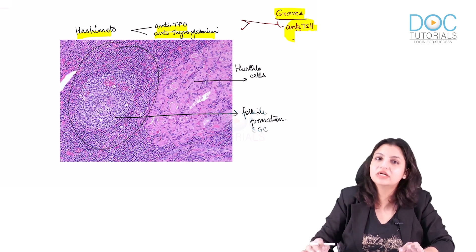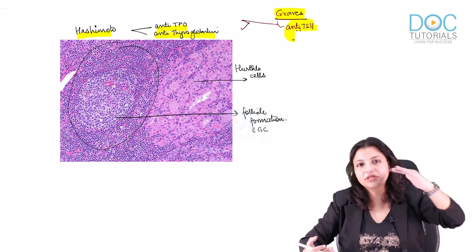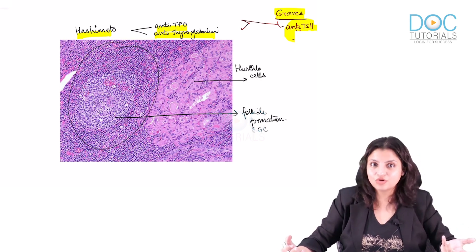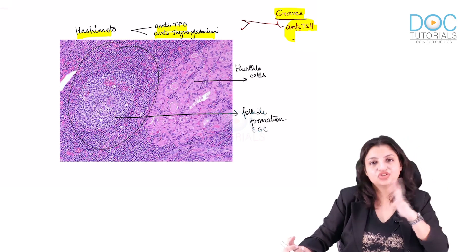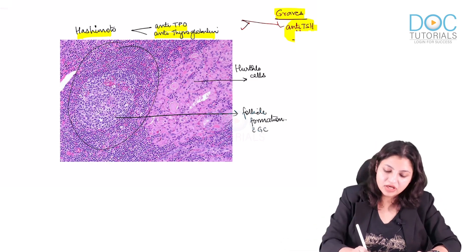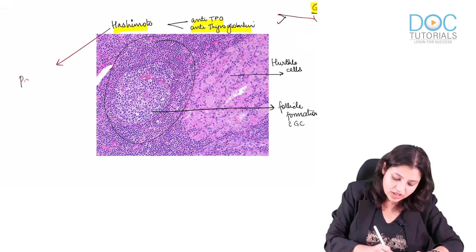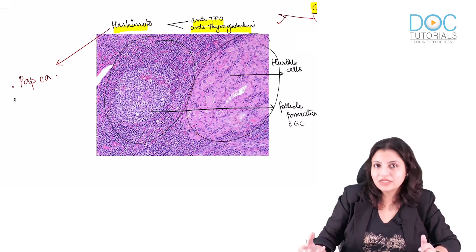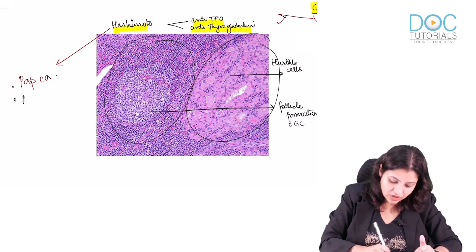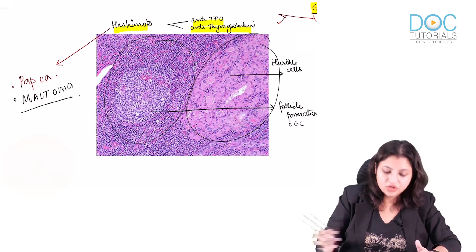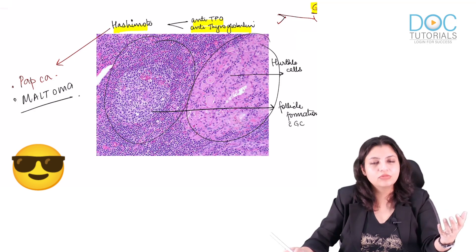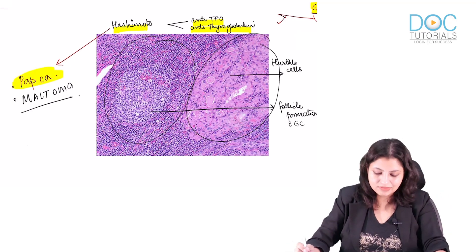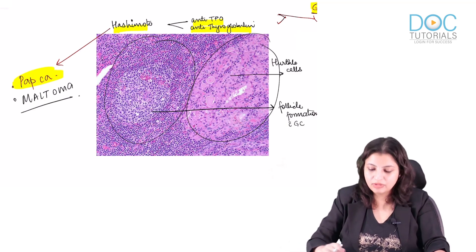The microscopy of Hashimoto is classical: Hürthle cells with follicle formation, germinal centers, and a lot of inflammatory injury. When we see this microscopy we suspect Hashimoto, but antibody testing is required to confirm. Hashimoto has an initial phase of hyperthyroidism followed by hypothyroidism. It most commonly develops papillary carcinoma of the thyroid, but due to abundant lymphoid follicles, it is also prone to MALToma. Papillary carcinoma is more common than MALToma in Hashimoto.